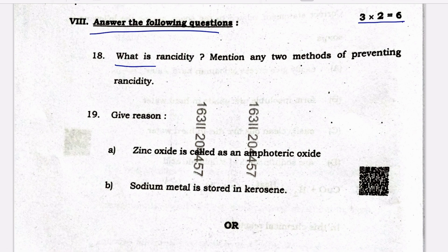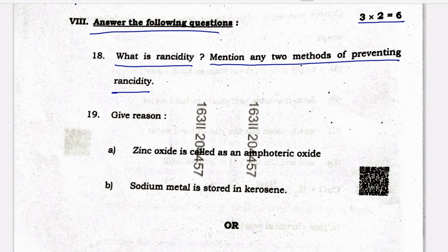Two-marks questions — three questions. First: what is rancidity? Mention any two methods of preventing rancidity. The oxidation of fats and oils when exposed to air is called rancidity. The two methods are: one is adding antioxidants, and another one is keeping food in airtight containers.